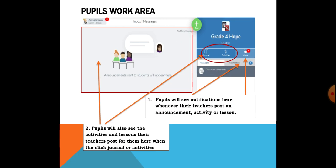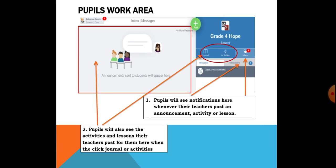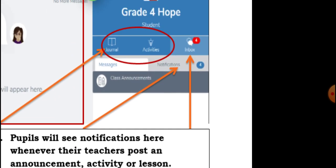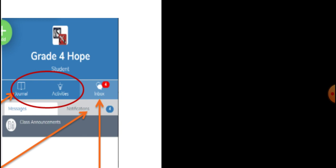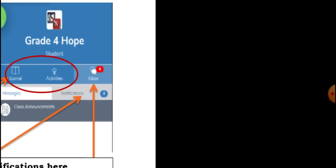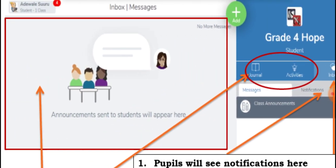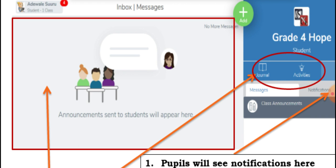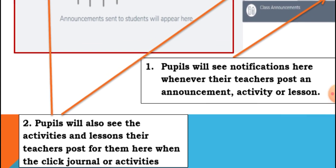When you sign in to your class, this is your work area as a pupil or learner. Whenever your teacher posts an activity or an announcement, you will see a notification in the inbox. The inbox will show you that there is either an announcement, an activity, or a lesson posted by your teacher. Once you click inbox, it will pop up here, showing the announcement or activity posted by your teacher.